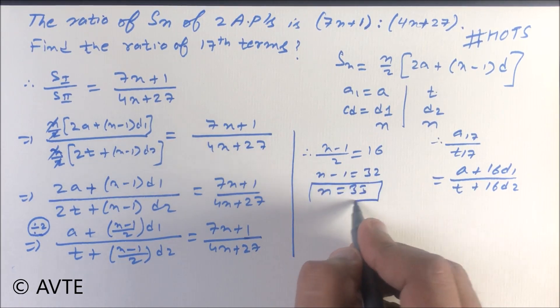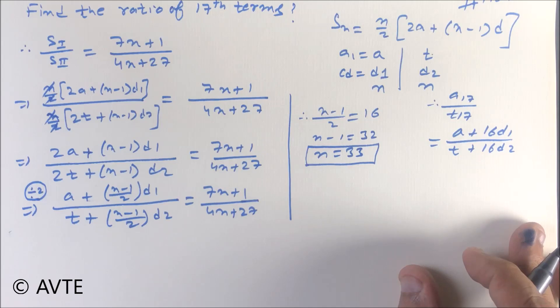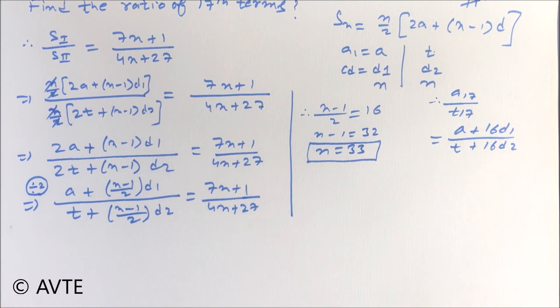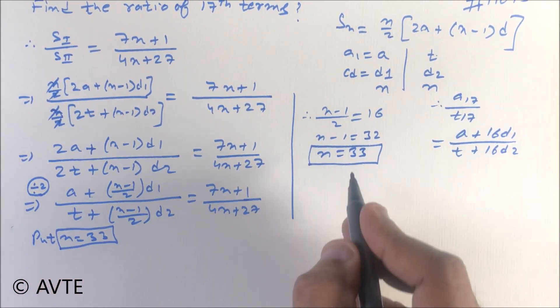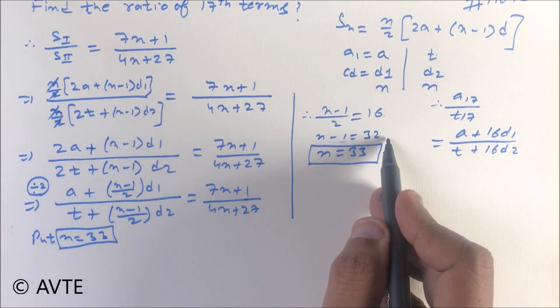And if you put n as 33, you can solve this question. So now guys, put n as 33. And how did 33 come? n minus 1 upon 2 is equal to 16, 16 into 2 is 32, n minus 1 is 32.